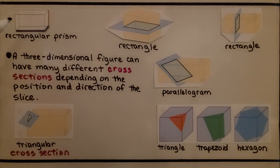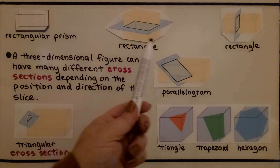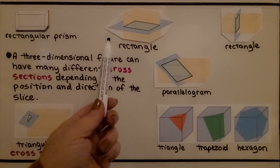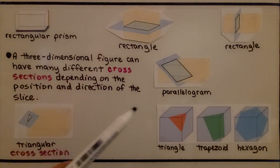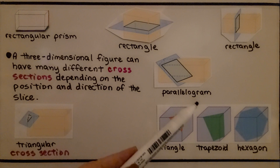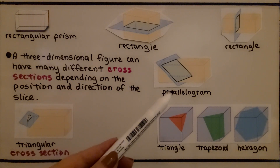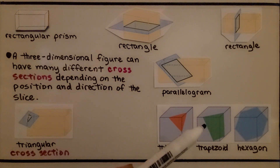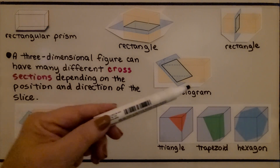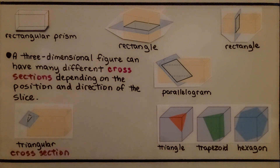Here's a rectangular prism. A three-dimensional figure can have many different cross-sections depending on the position and direction of the slice. We could slice it horizontally and make a rectangle, or slice it vertically and make a rectangle. We could slice it on an angle — on a slant — and make a parallelogram. We could even slice off a corner and make a triangle, or more of the corner to make a trapezoid.